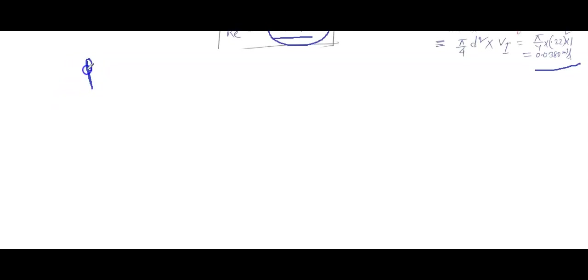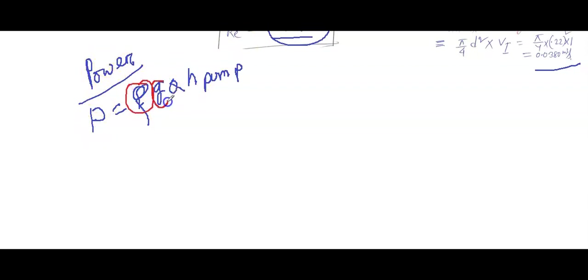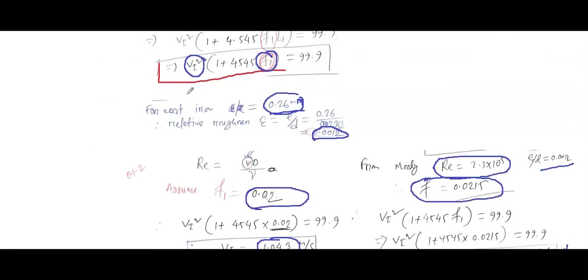For the pump power when cavitation is about to begin, the formula is: Power = ρ·g·Q·H_pump. We know the water density, gravity, and the flow rate we just calculated. What we still need is the pump head H_pump.